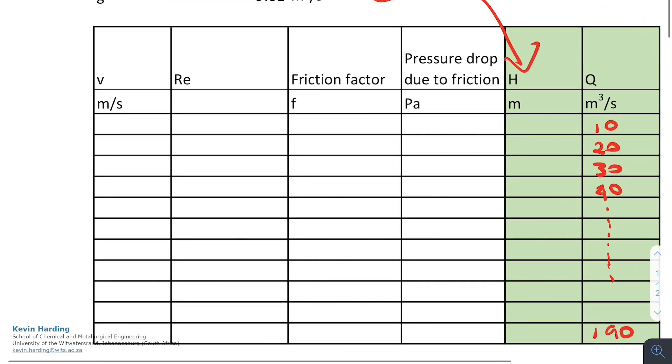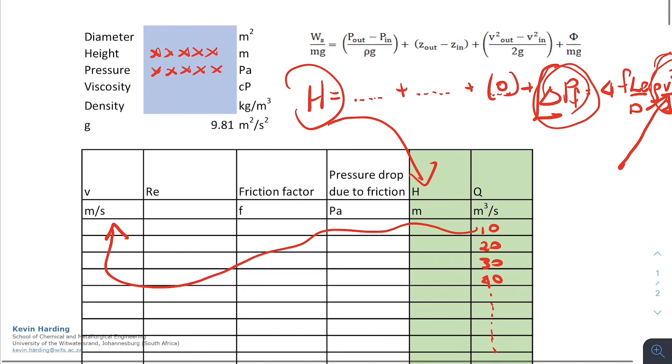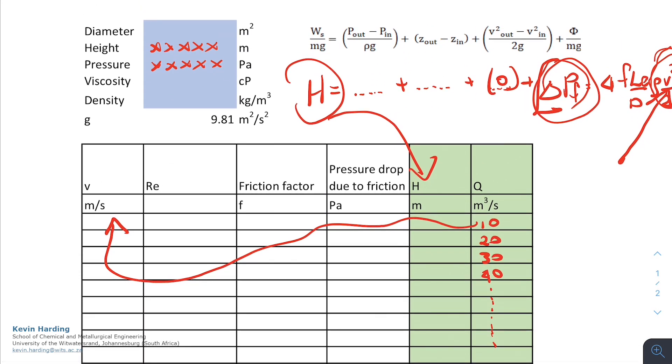To do that, we are going to take the Q values and we're going to convert them into a velocity term. That velocity we're going to get from the Q value and the diameter. So that's up in the top left-hand corner, which I can get from our question. I can convert the diameter to an area and I can use that to then get a linear velocity in meters per second.